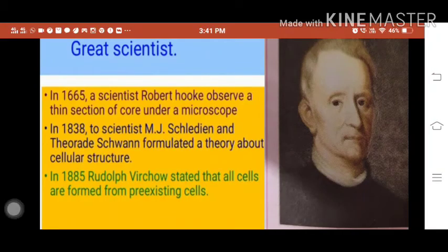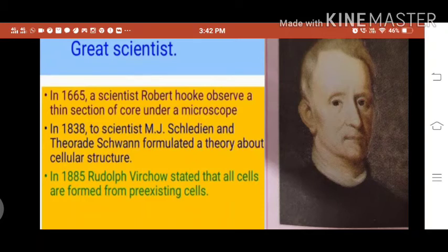In 1665, a scientist Robert Hooke observed a thin section of cork under a microscope. In this section, he saw hexagonal compartments like those of a beehive. He named those compartments cells. This term is derived from the Latin word cella, which means small rooms.